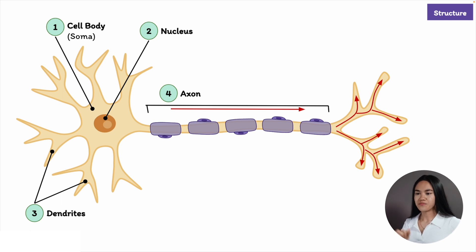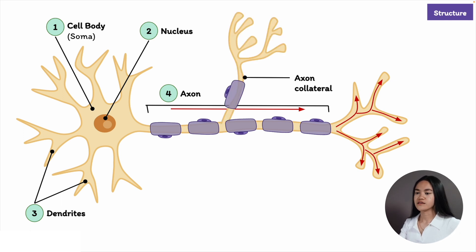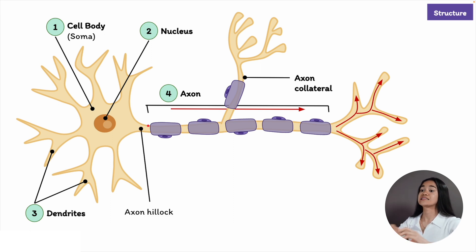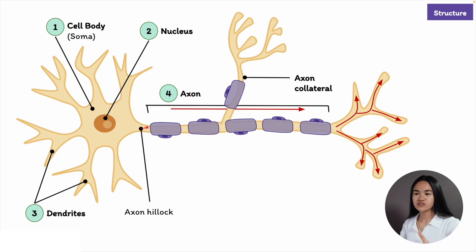Axons vary in length, and they also have several branches called collaterals, allowing information to be sent simultaneously to several different areas. This cone-shaped base is the axon hillock — it's the part of the axon that extends from the cell body. This is the place in most neurons where electrical signals are generated, and these signals then travel along the axon.